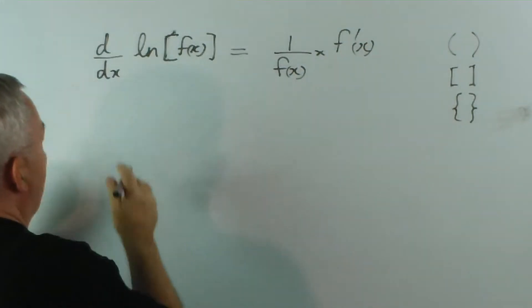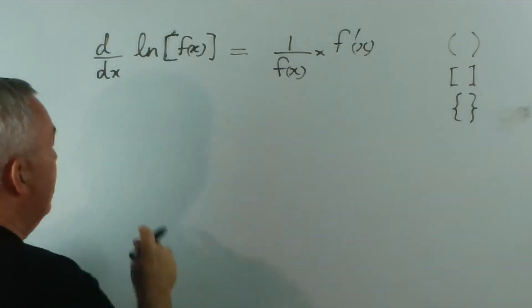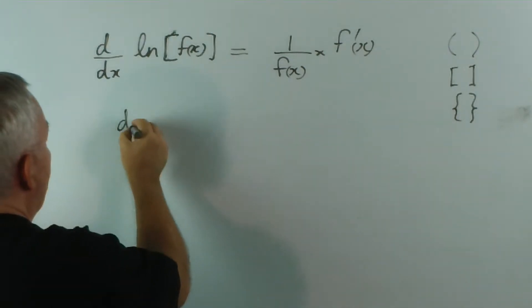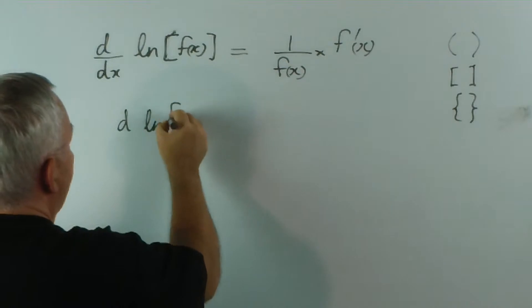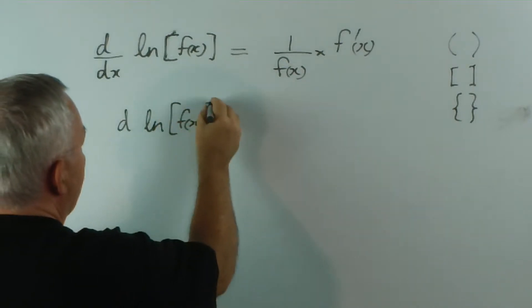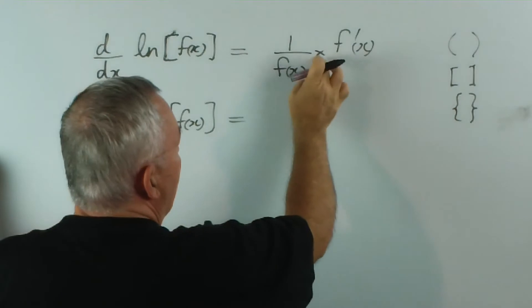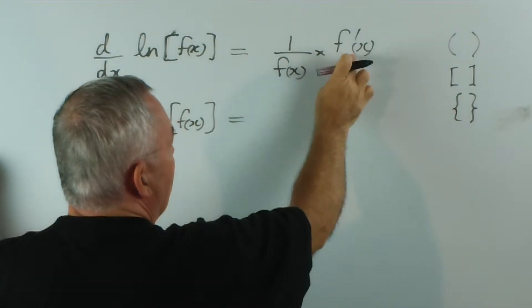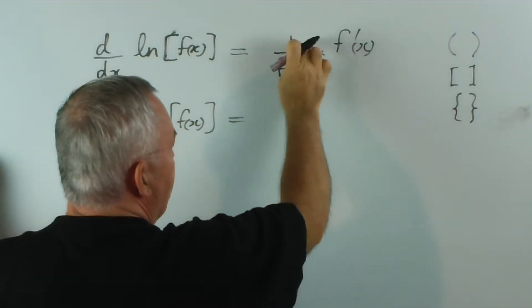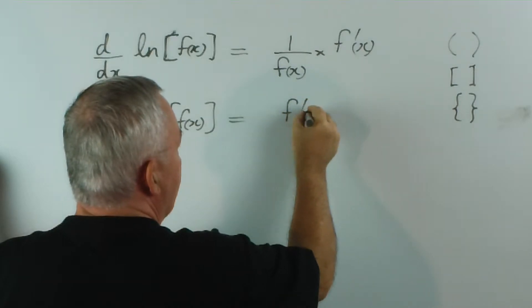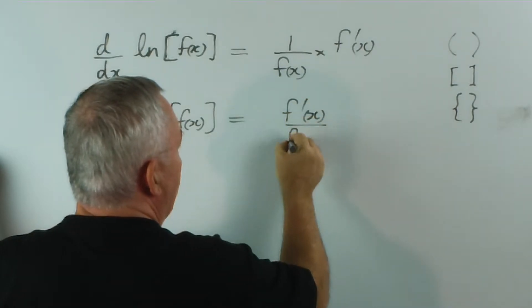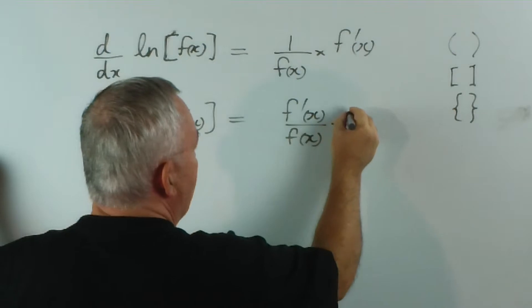Now I'm going to multiply, as I did in previous videos, by dx. And we have d of ln[f(x)] is... Because this is a simple product, I'm going to write 1 times f'(x) on the top. So it's just f'(x) over f(x) times dx.